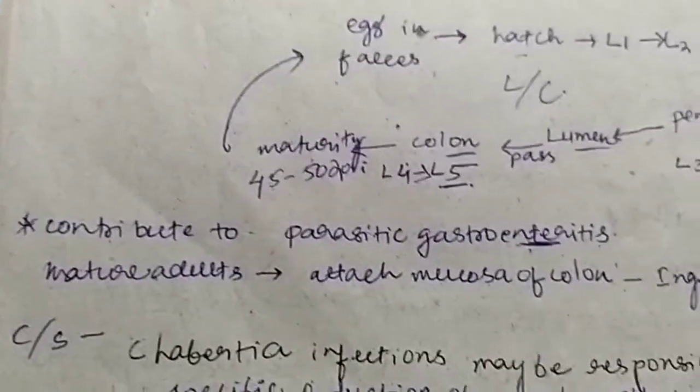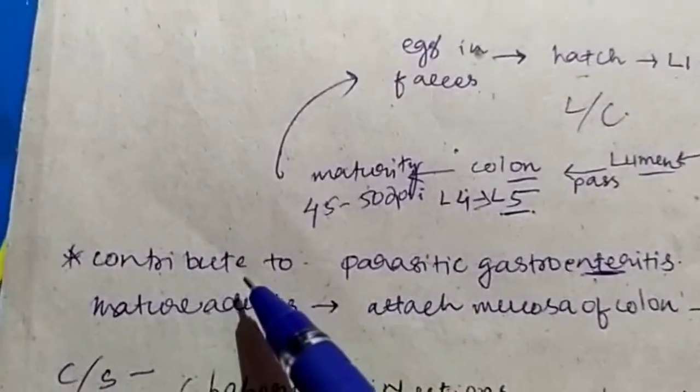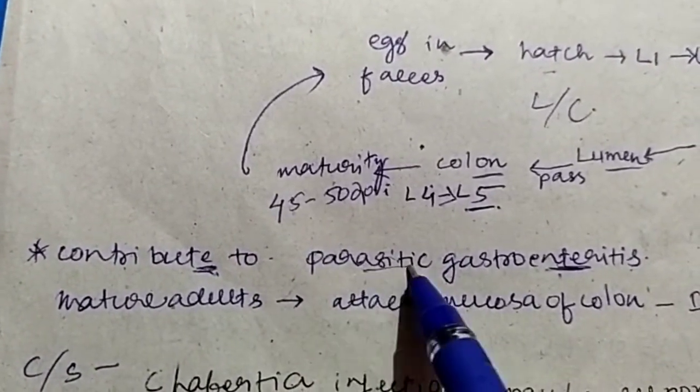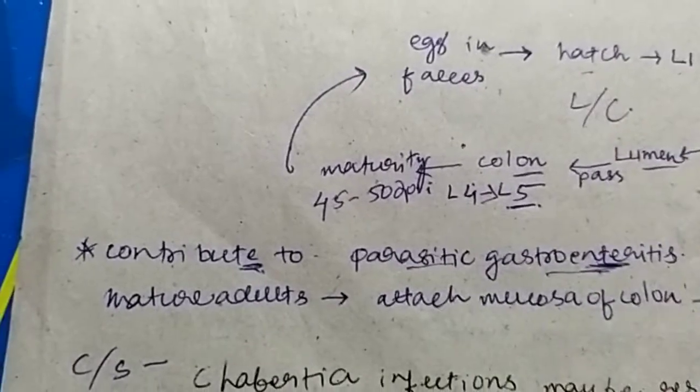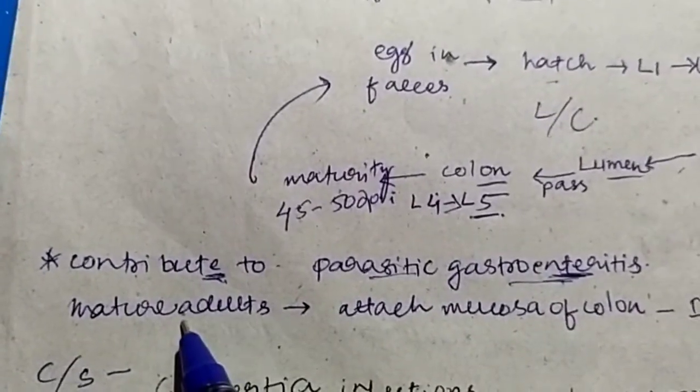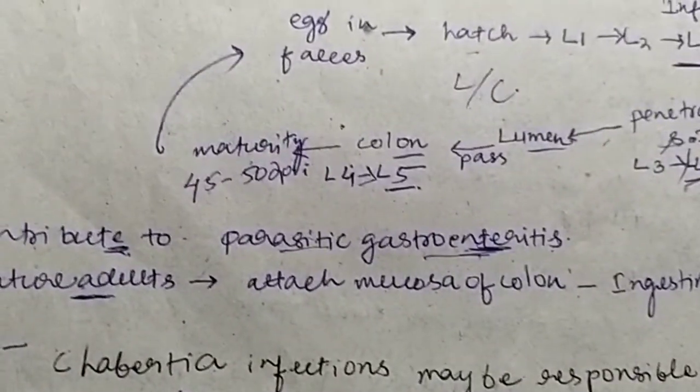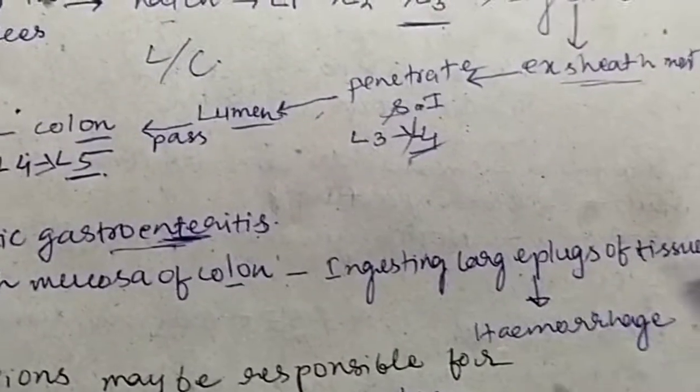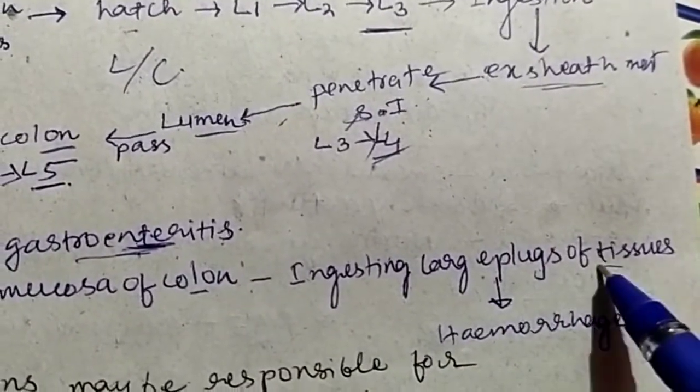And now let us come to the pathogenicity. And this parasite contributes to parasitic gastroenteritis. And because of mature adults, they attach to the mucosa of colon and they start to plug the tissue of the mucosa.